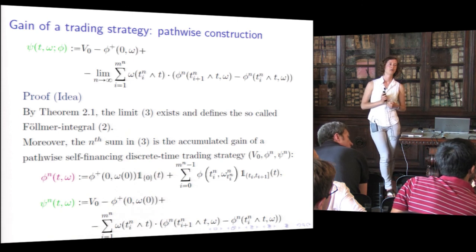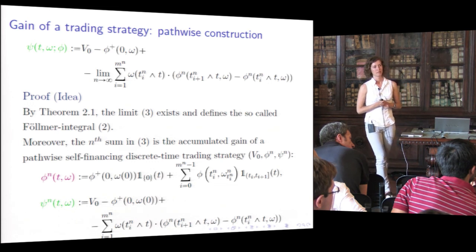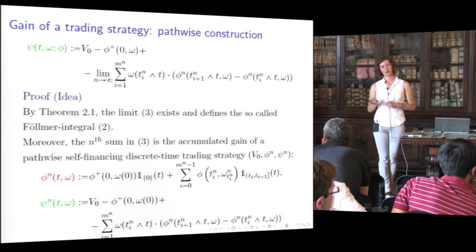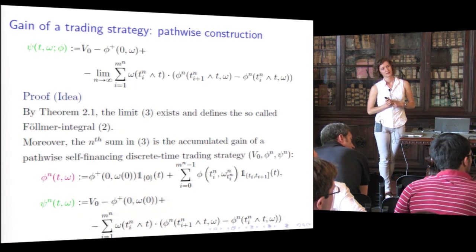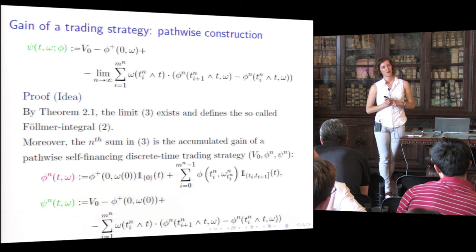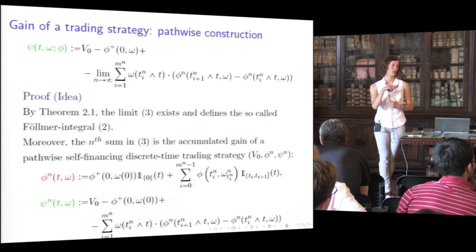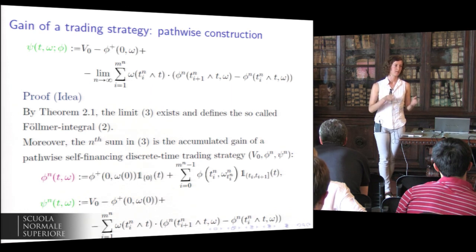Question from the audience: is the filtration canonical or something else? The filtration is the canonical one — the one generated by the canonical process on the space of Cadlag paths. This simply means that knowing F_t tells you the path up to t.